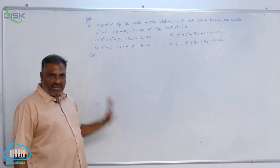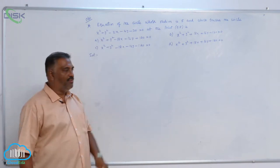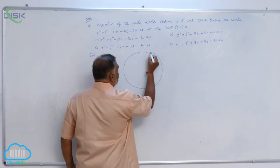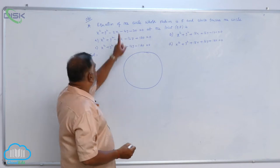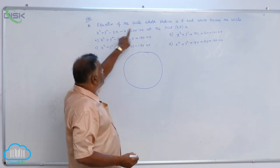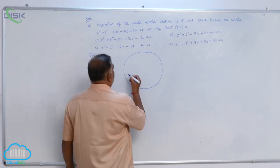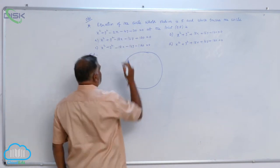You are given a circle, and we need to find another circle. The required equation of the circle that we are going to find is this one, and the given circle is like this, touching at the point (5, 5). First of all, let us discuss the given circle.